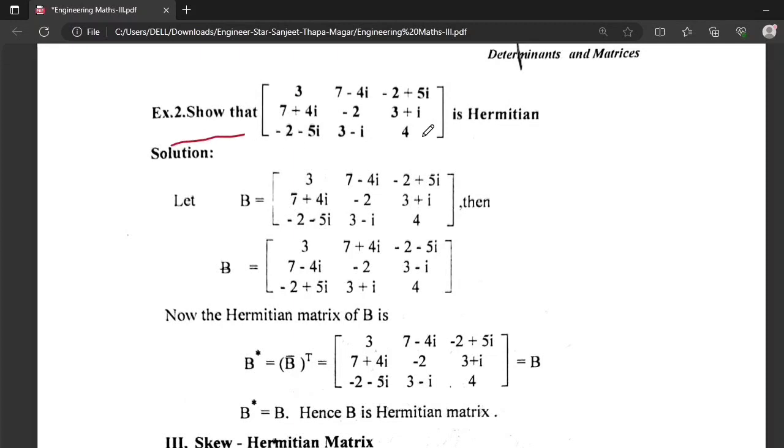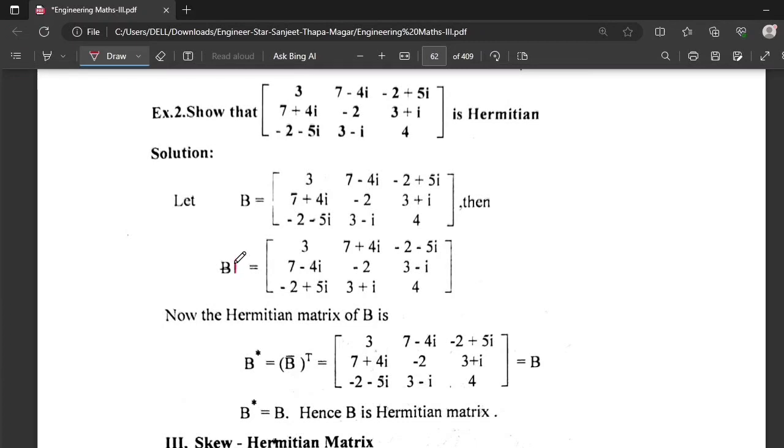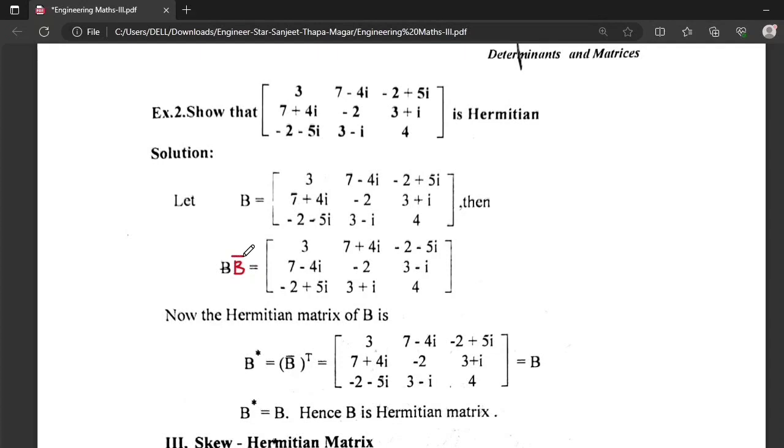For the conjugate of matrix B, wherever there is a positive sign of i, change it to negative, and wherever there is negative, change it to positive sign for only imaginary terms i.